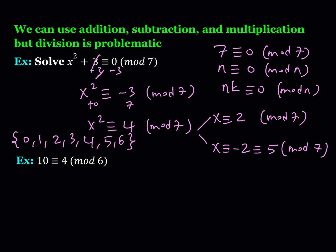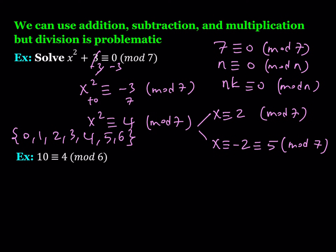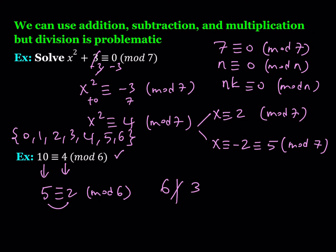Division is problematic in modular arithmetic. For example, is 10 congruent to 4 mod 6? Yes, because 10 minus 4 is 6. If we divide both sides by 2 since it's a common factor, is 5 congruent to 2 mod 6? That's not true, because 5 minus 2 is 3 and 6 does not divide 3. However, there is a way to overcome this sometimes — if you divide both sides including the mod by the common divisor, then it works.